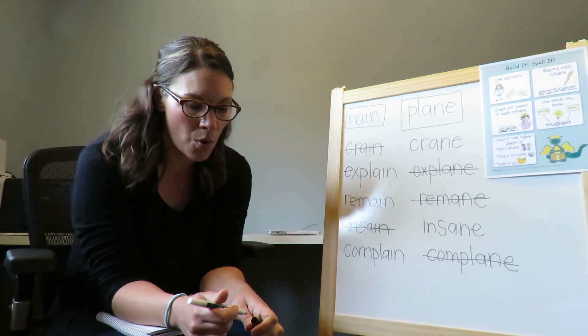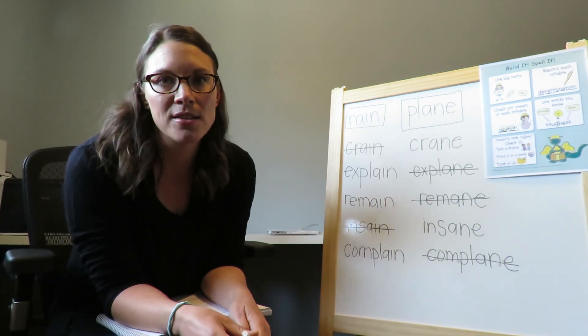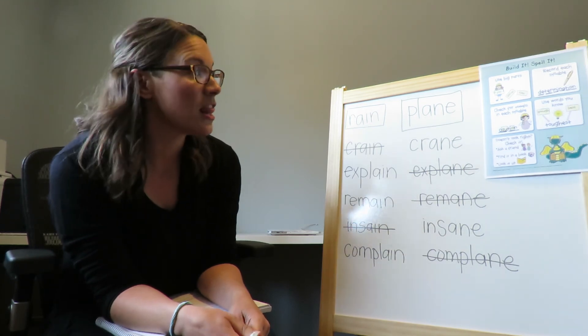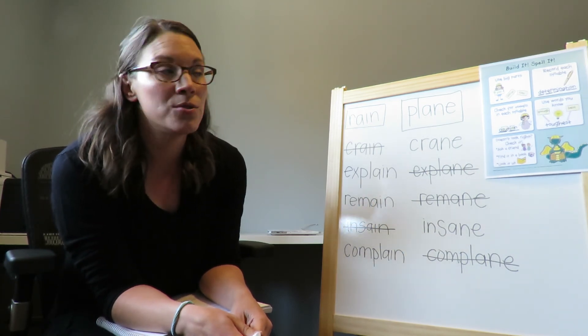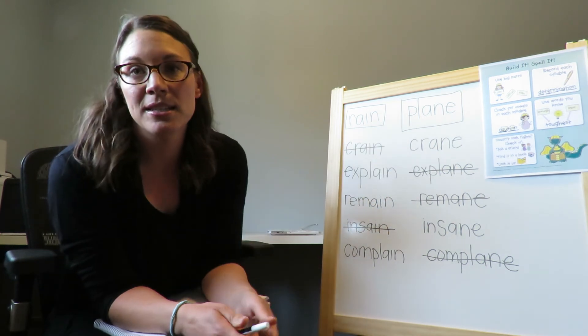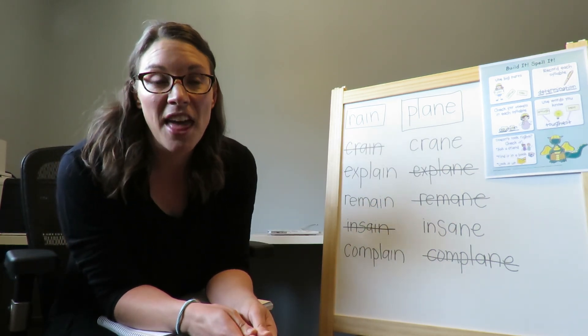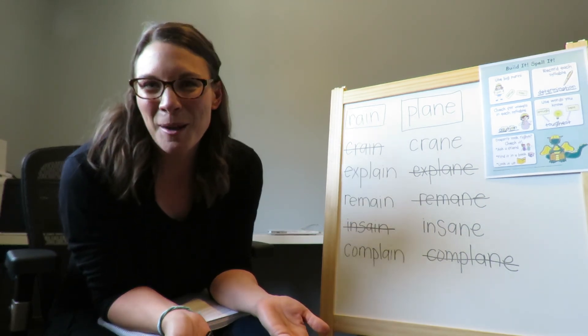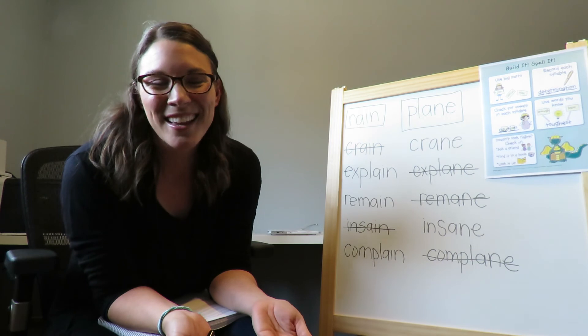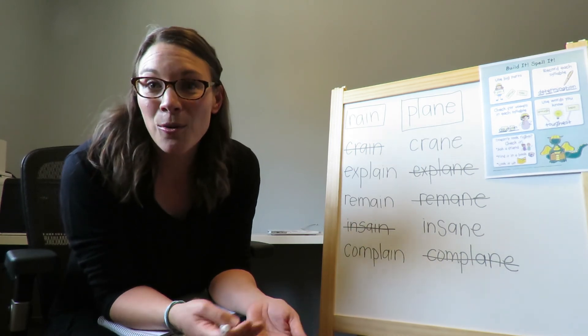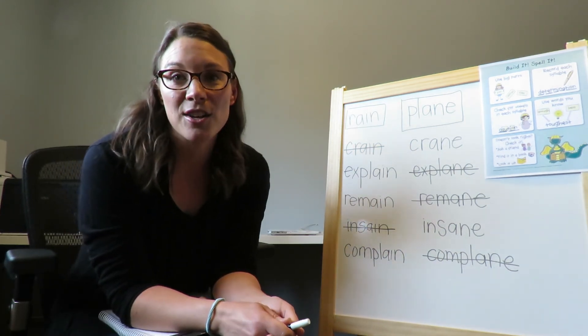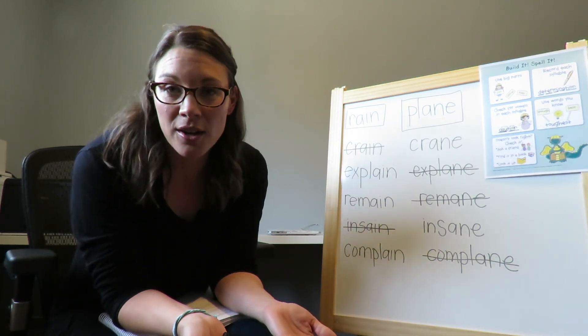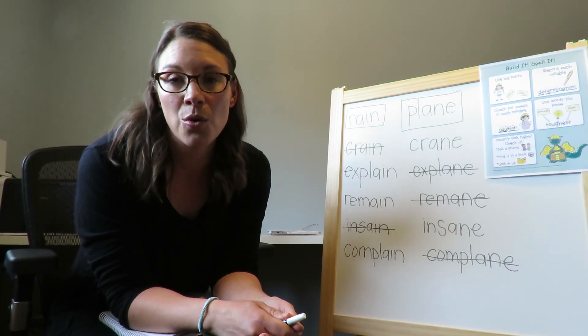And there we go. So when you guys come across words that have long vowel sounds, you can think about the different ways that you can spell the long vowel sound. Then you can write the word both ways. Or sometimes there's more than two ways. You could write it three ways or even four ways if that's how many spellings there are. And then write it out and then look at the words and see which one looks right.